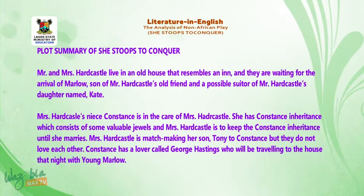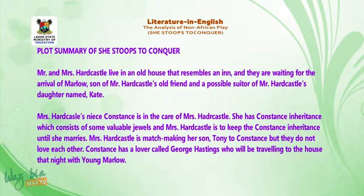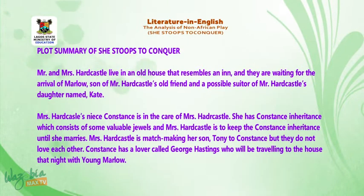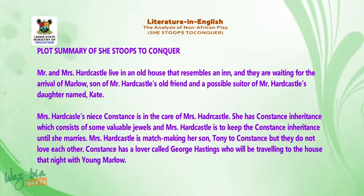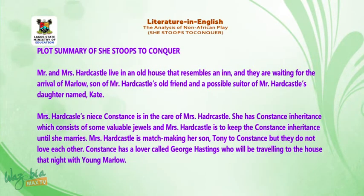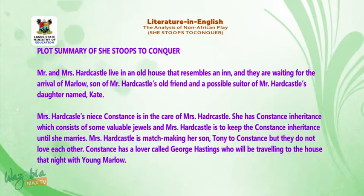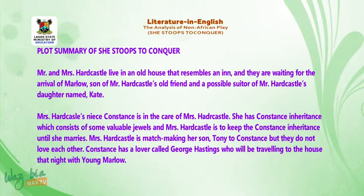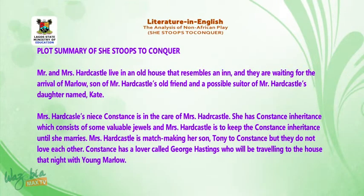Mr. and Mrs. Hardcastle live in an old house that resembles an inn, and they are waiting for the arrival of Marlowe, son of Mr. Hardcastle's old friend, and a possible suitor of Mr. Hardcastle's daughter named Kate. Mrs. Hardcastle's niece, Constance, is in the care of Mrs. Hardcastle. She has Constance's inheritance, which consists of some valuable jewels.